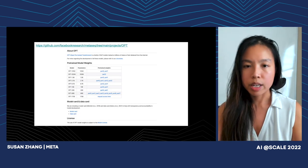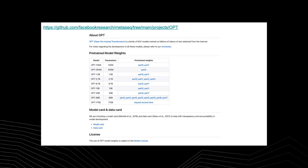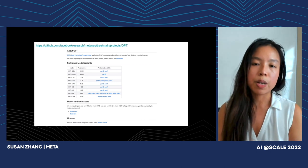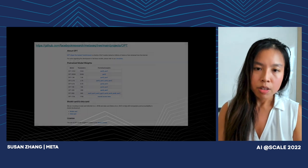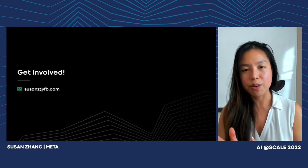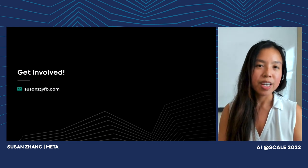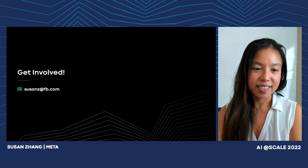All of our OPT models, including smaller-scale ones ranging from 125 million parameters all the way up to 66 billion, are publicly available for download at Facebook Research slash MetaSeq on GitHub. For the 175 billion parameter model, you do have to request access — agreeing to non-commercial use for research purposes only, ideally affiliated with an academic institution with a publication history. We really want to encourage researchers who previously didn't have access to these models due to financial circumstances. Our code is open source, our logbooks are publicly available, and you can get the models online. Thanks for your time.